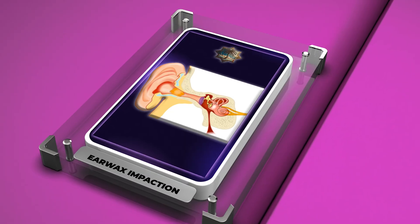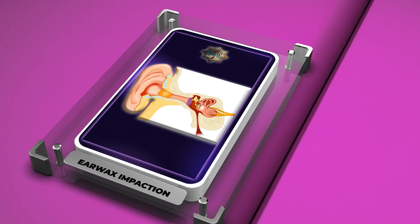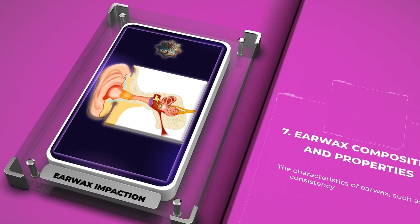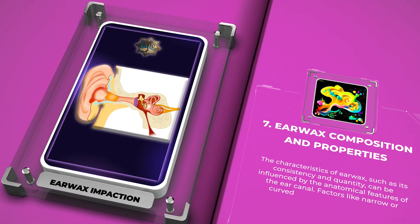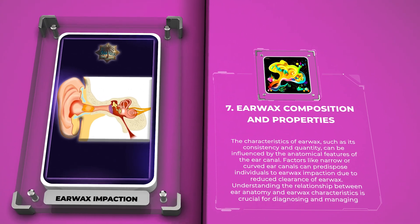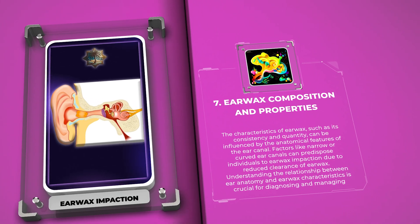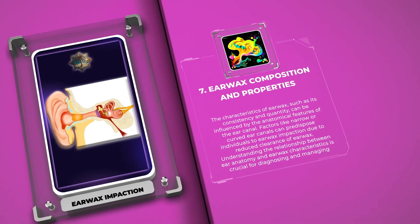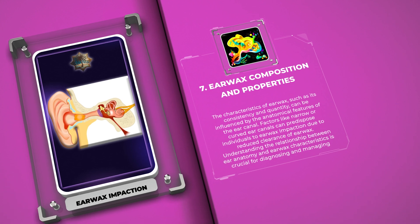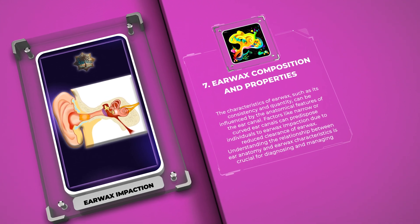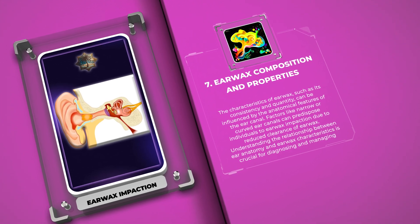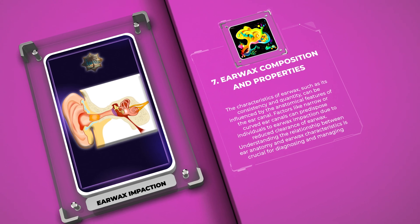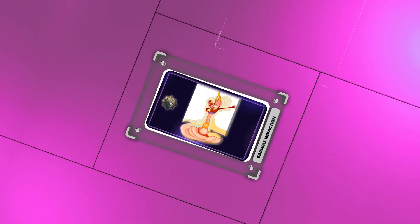The characteristics of earwax, such as its consistency and quantity, can be influenced by the anatomical features of the ear canal. Factors like narrow or curved ear canals can predispose individuals to earwax impaction due to reduced clearance of earwax. Understanding the relationship between ear anatomy and earwax characteristics is crucial for diagnosing and managing impaction effectively.